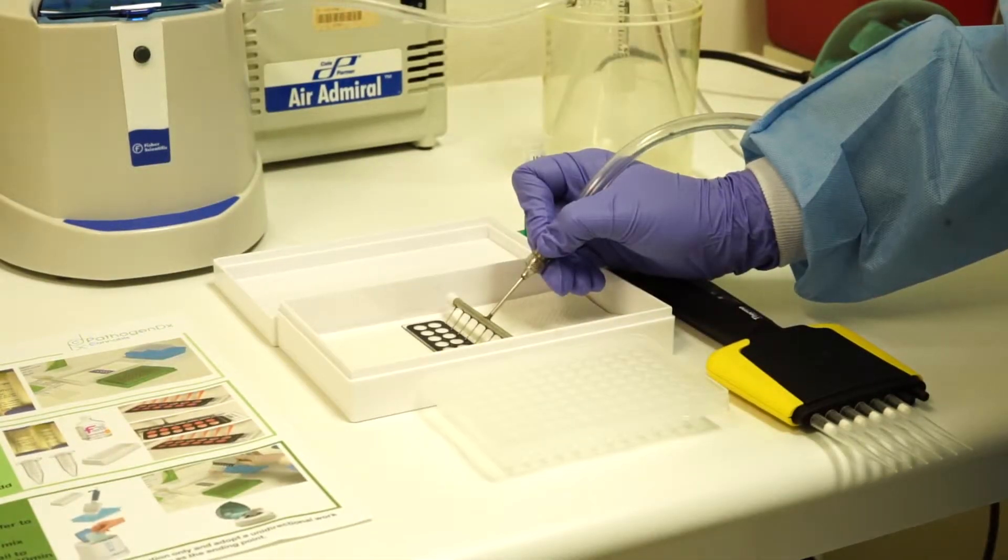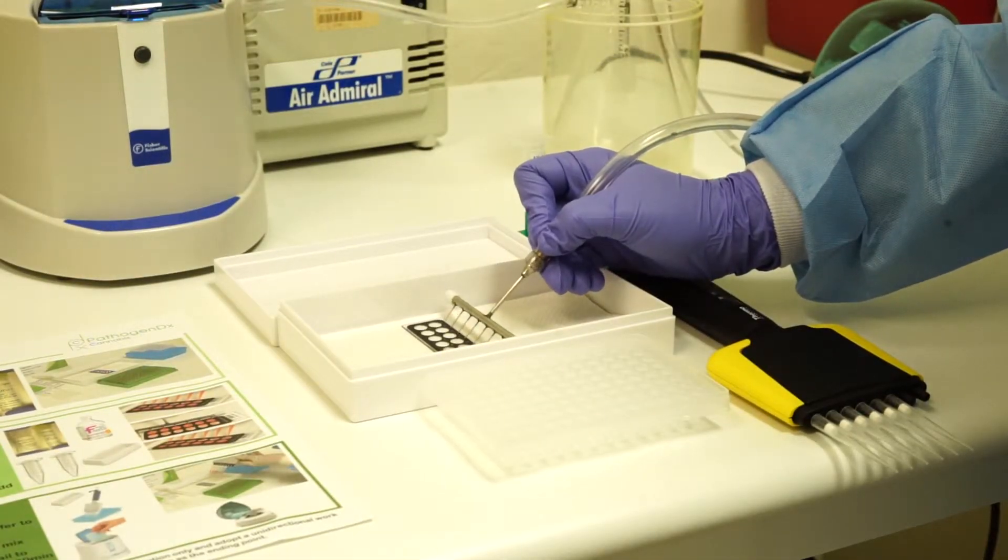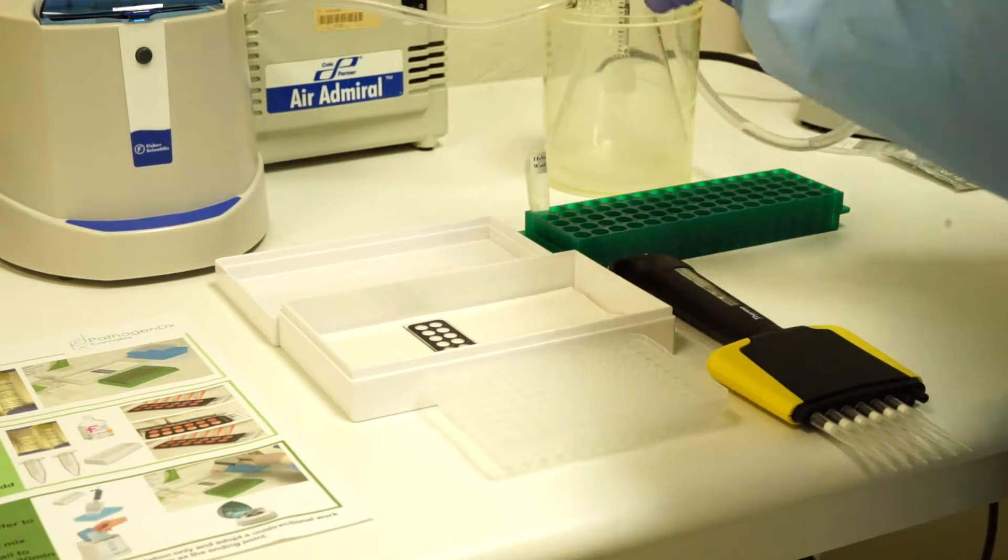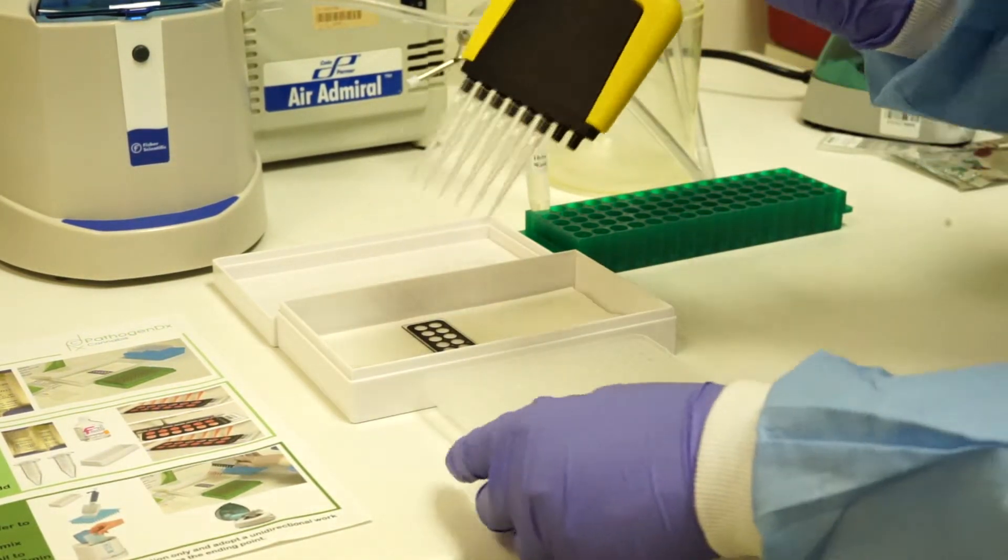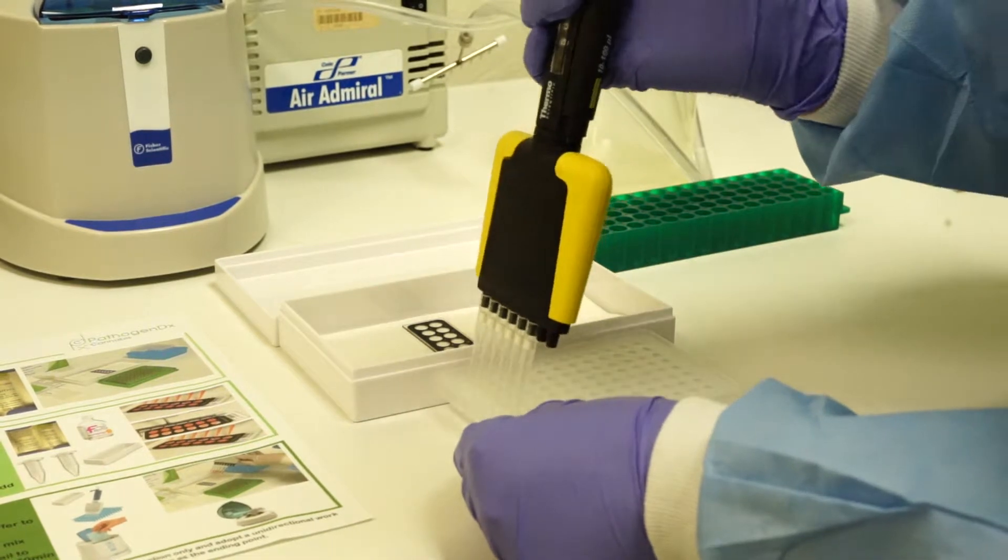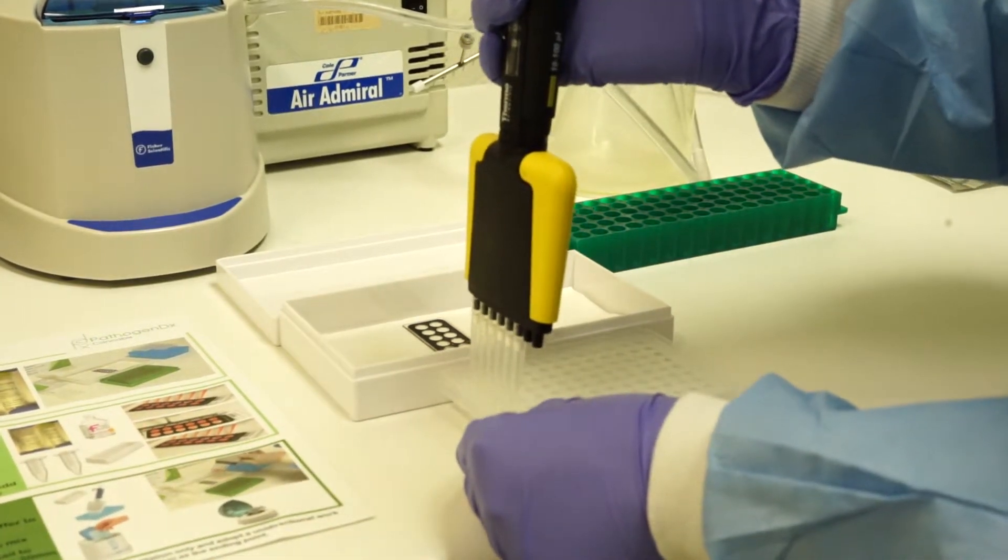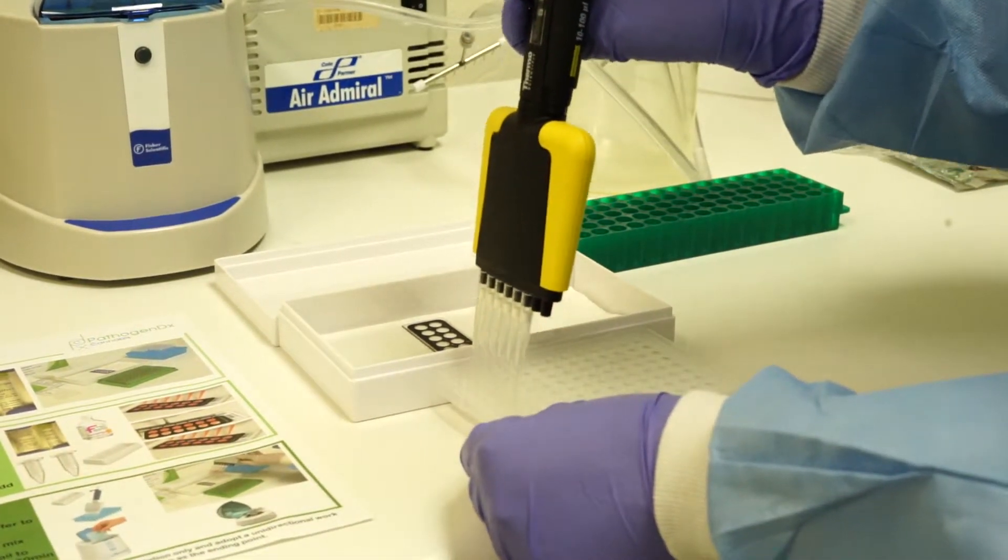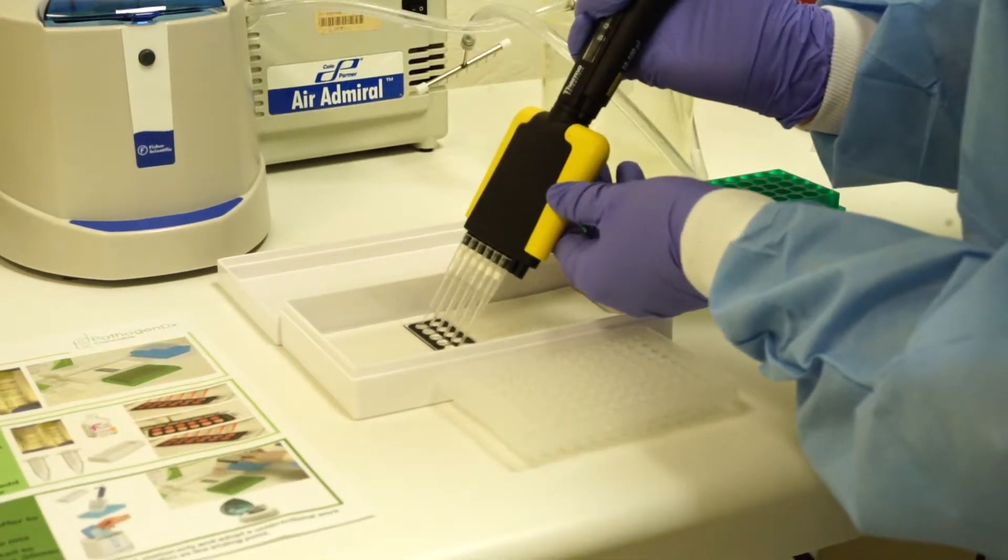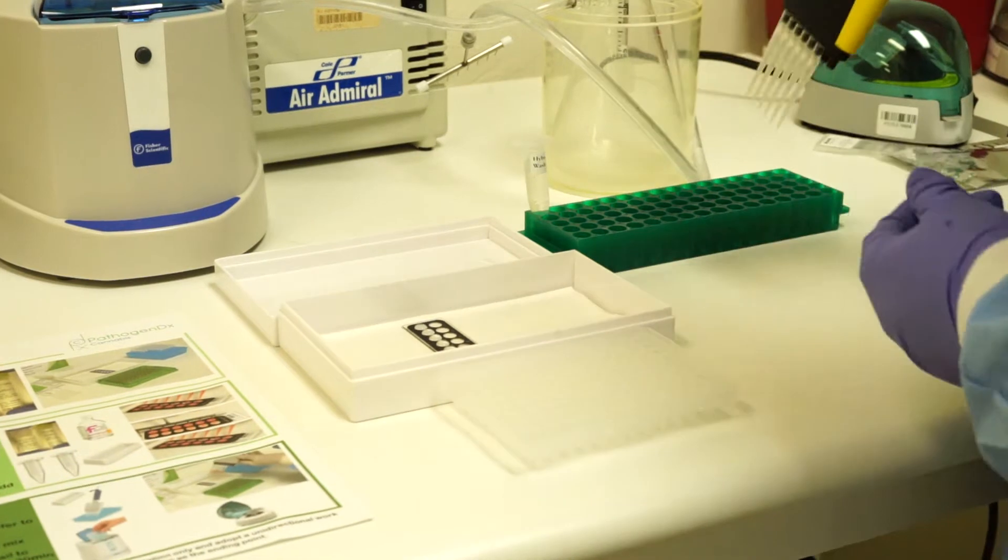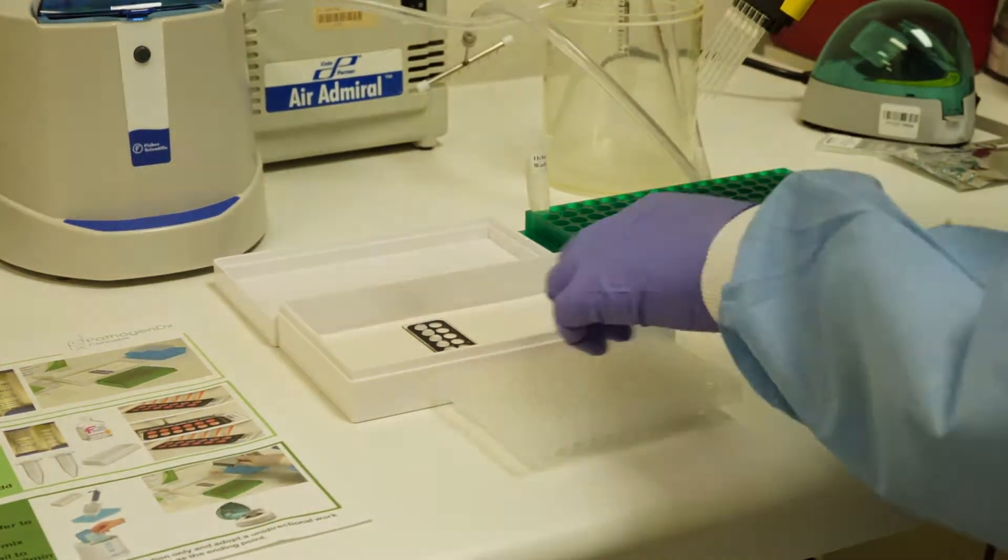After the five minute pre-equilibration step, remove the pre-hybridization buffer from the slide. Set your pipette to 50 microliters. Carefully remove 50 microliters from your PCR plate, which now contains the hybridization cocktail, and dispense slowly onto your slide. Avoid any contact with the surface of the slide.